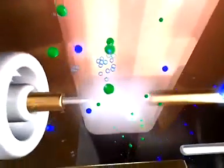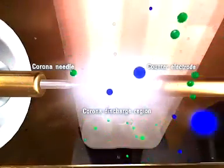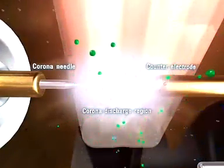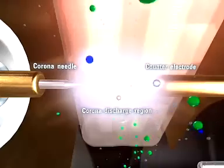Uncharged analyte molecules and solvent molecules enter a region of corona discharge that is created by a potential difference between the corona needle and the counter electrode.